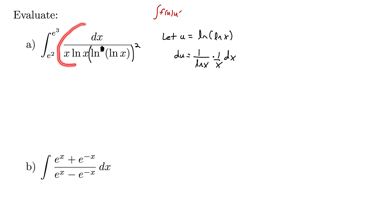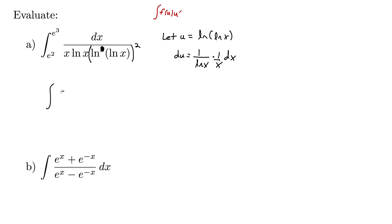Check this out: dx over x natural log x — that whole thing becomes our du. So what we're looking at is the integral of du over u squared. Look how much simpler that integral is. It's quite amazing.